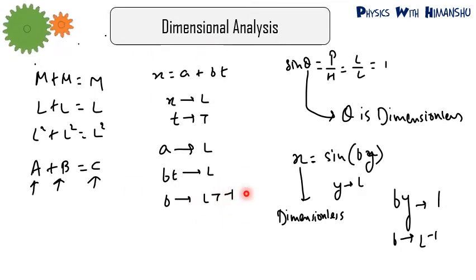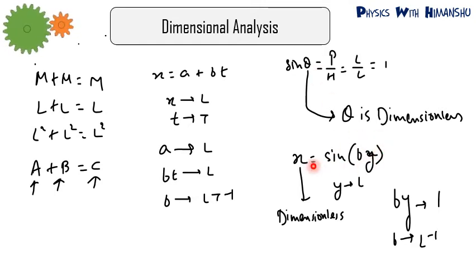Now, sin θ equals perpendicular divided by hypotenuse. Both are lengths, so length cancels with length — sin θ is dimensionless. Similarly, θ is also dimensionless. So if x = sin(by), since sin is dimensionless, x is dimensionless. Then by must be dimensionless, so by = 1, meaning b = L⁻¹. The dimension of b is L⁻¹.